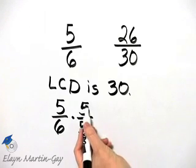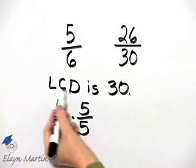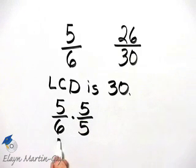Now remember why that is, because 5 over 5 is the same as 1, and multiplying a fraction or any number by 1 does not change its value.